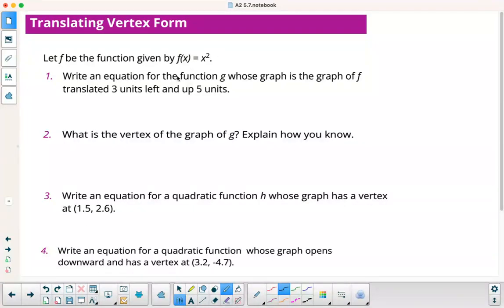This time, new function. They're giving us the transformations. Left 3 up 5. This is g of x. We're going to go left 3, so it's going to be x plus 3 squared. And then up 5 means you add 5. So in other words, it's f of x plus 3 plus 5.